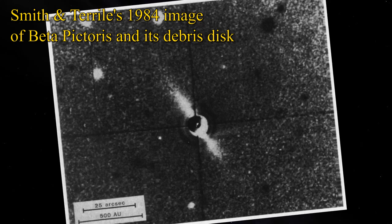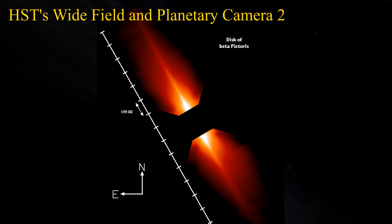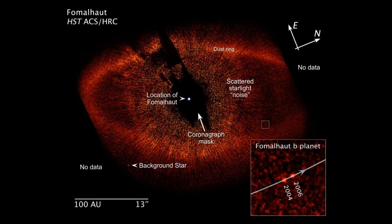Fomalhaut, Epsilon Eridani and Beta Pictoris have all been found to have candidate planets in orbit around them. The debris disc around Fomalhaut contains the first directly imaged extrasolar object orbiting another star.